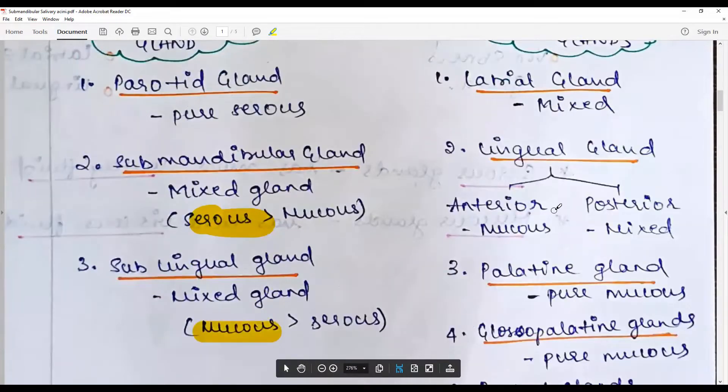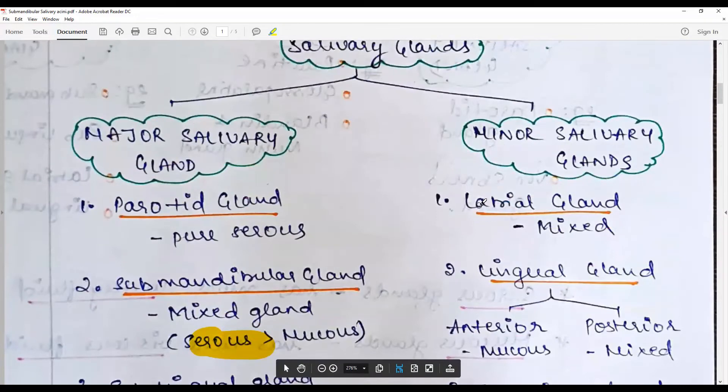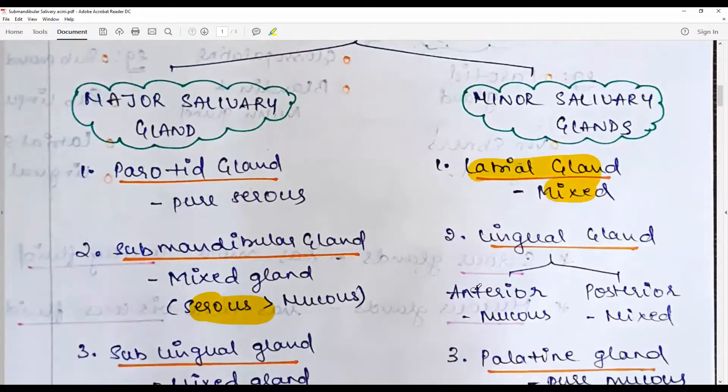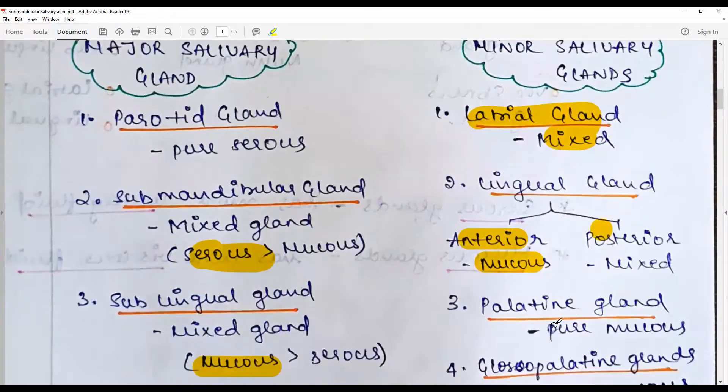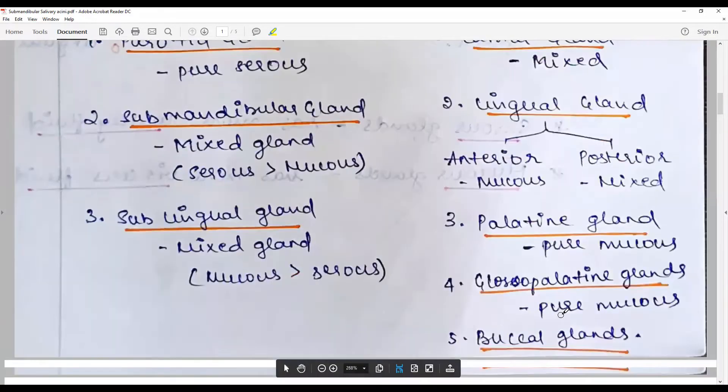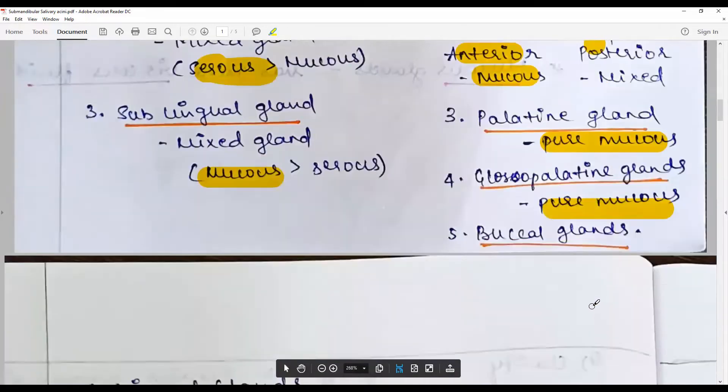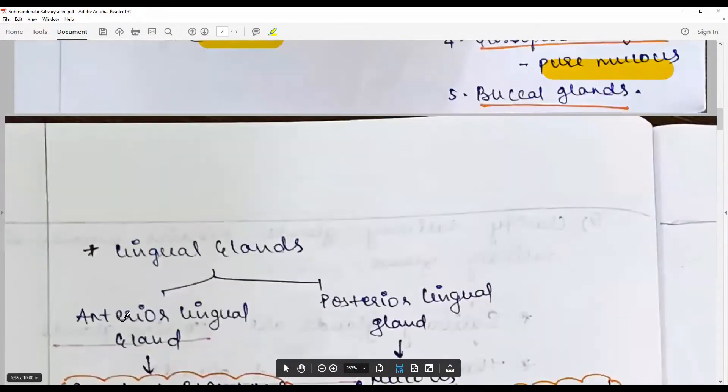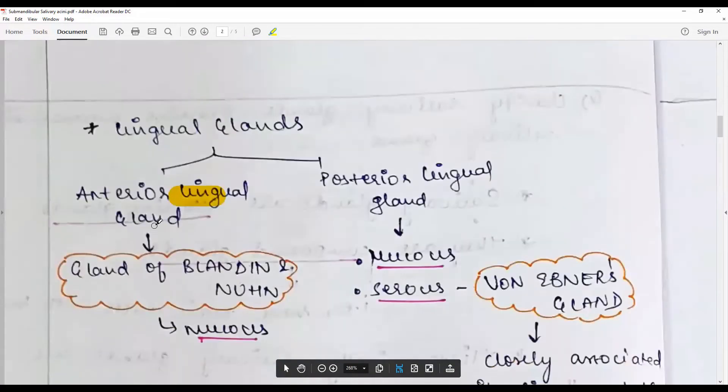Minor salivary glands include labial salivary gland (mixed), lingual glands anterior (purely mucus), posterior (mixed), palatine (purely mucus), glossopalatine (purely mucus), buccal gland (serous). Lingual glands: anterior glands are the glands of Blandin and Nuhn.